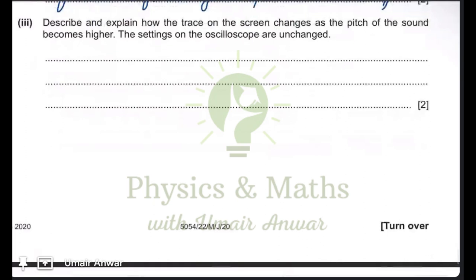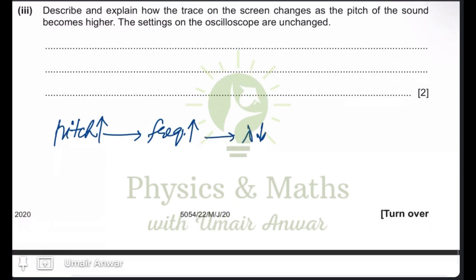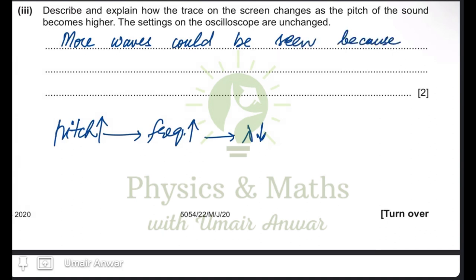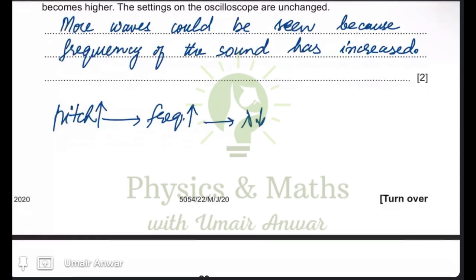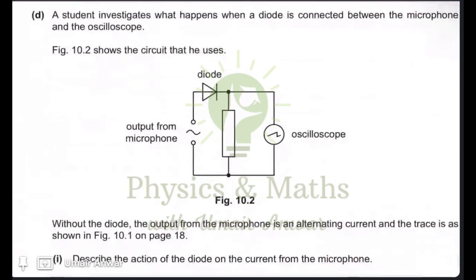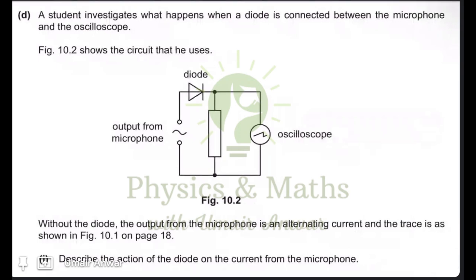As the pitch of the sound becomes higher, pitch is related to frequency, so increasing pitch means increasing frequency. With increased frequency, the wavelength becomes shorter. With the oscilloscope settings unchanged, more waves would be seen on the screen because the frequency of the sound has increased. Since frequency is the number of waves per unit time, more waves are formed per unit time, which decreases the wavelength.